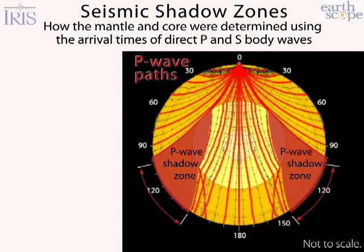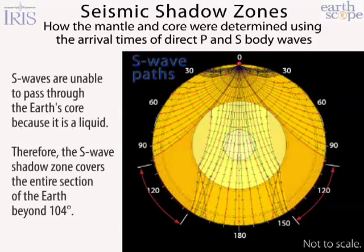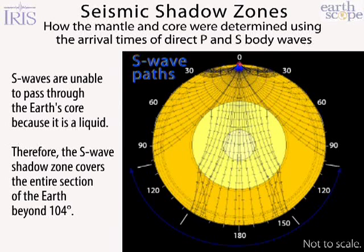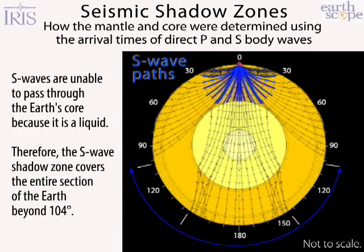S waves travel along the same path as the P waves but at a slower velocity, because they travel in a shearing motion perpendicular to the direction of travel. It's because of this shearing that they're stopped entirely by the liquid core. This creates an even broader shadow zone everywhere beyond 104 degrees.